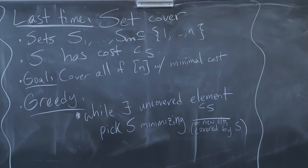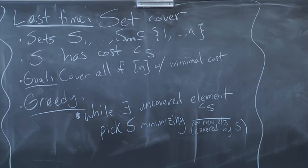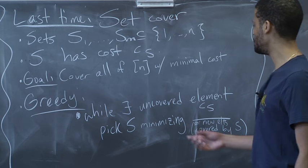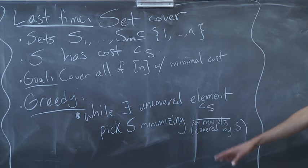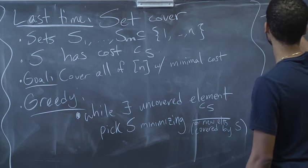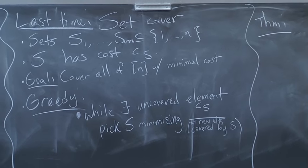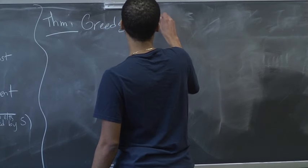The greedy algorithm — in the unweighted case, you just keep taking the set that covers the most new elements. But when you have costs on the sets, you pick the set, as long as there's an uncovered element, which minimizes the ratio between its cost and the number of new elements you get to cover by picking it. Theorem: greedy is a log n approximation.